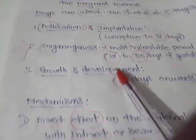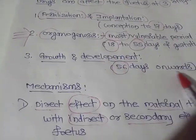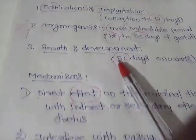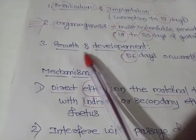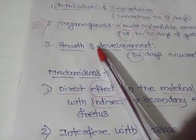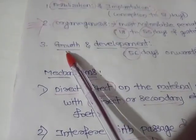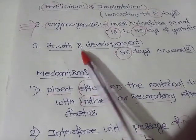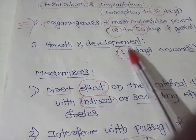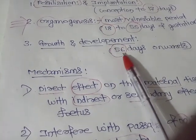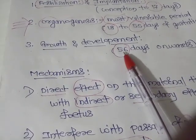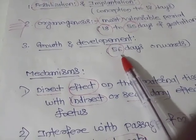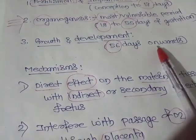Then there is the period of growth and development, from 56 days onwards. Retardation of growth and development may occur if a drug is given after 56 days.